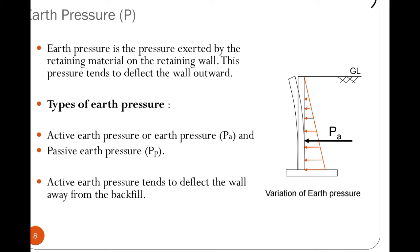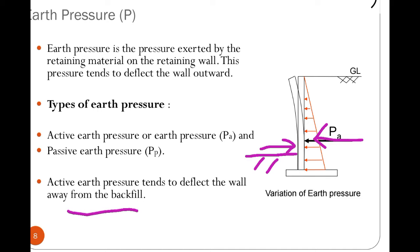There are two types of pressure acting on the retaining wall: the first is active earth pressure and the second is passive pressure. Whenever a structure is retaining the soil, that soil pressure is called active pressure. In the opposite direction, there is an equivalent and opposite reaction. On the downstream side where there is soil, that pressure is called passive pressure. Earth pressure is the pressure exerted by the retaining material or soil, and this pressure helps to design the retaining wall. Active pressure tends to deflect the wall away from the backfill.